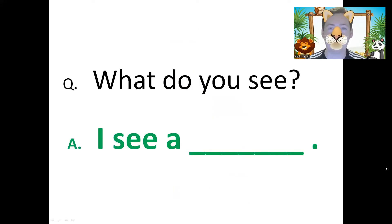Okay, so we have three questions. Number one: What is it? It is a monkey. It is a monkey. Number two: What do you see? I see a cat. I see a cat. Good. And number three: What color is it? It is black. It is black. Very good. Well done. Perfect.